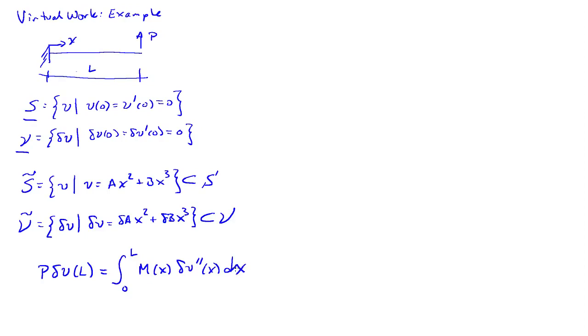And the way that we do this is we plug in the two functional forms for the solutions and the test functions into the virtual work equation. So if we plug in on the left side, we have P, the test function evaluated at L. So that is del A L squared plus del B L cubed. And then on the other side of the equation, we're going to have the integral zero to L EI times the virtual curvature associated with the real motion.